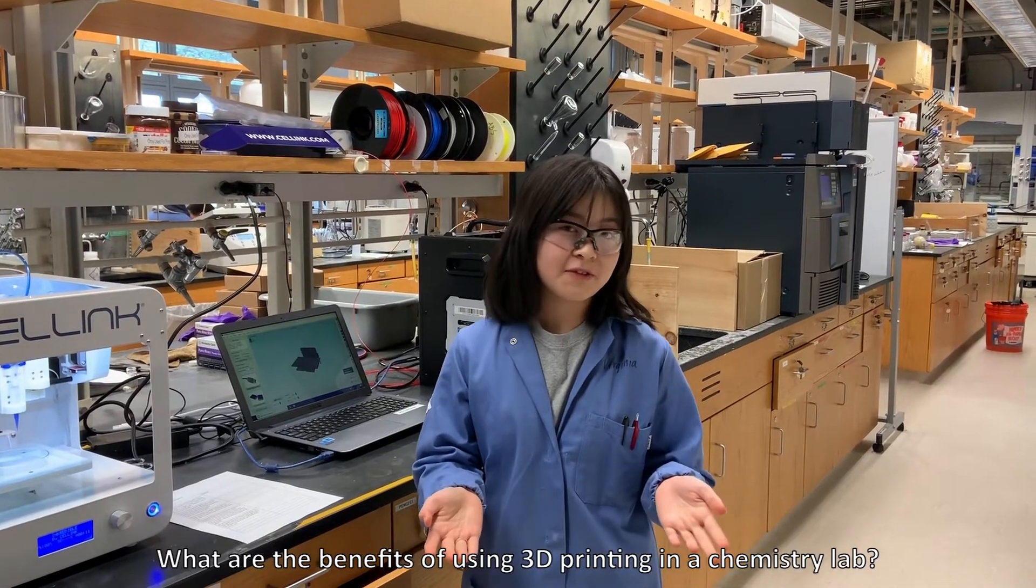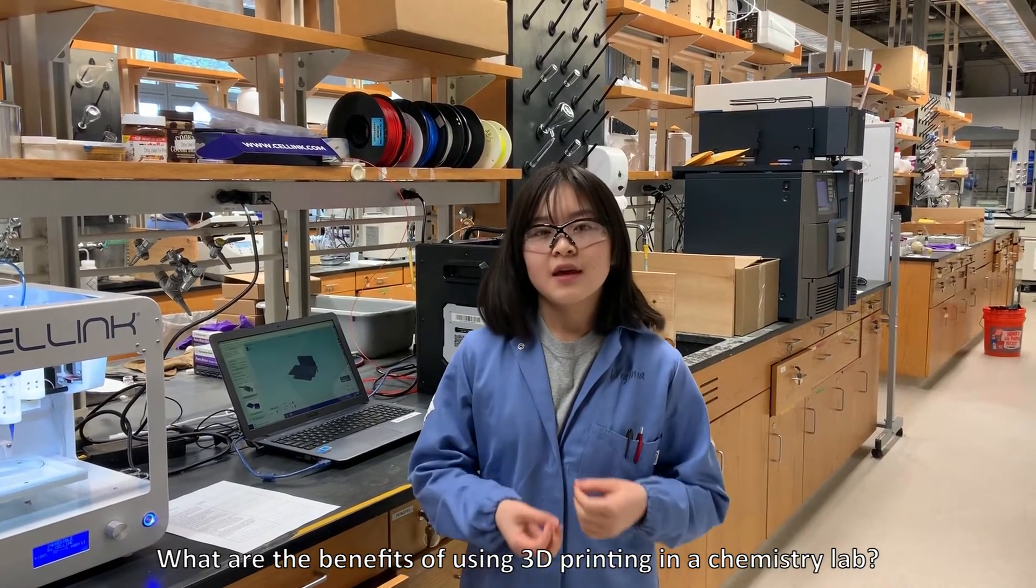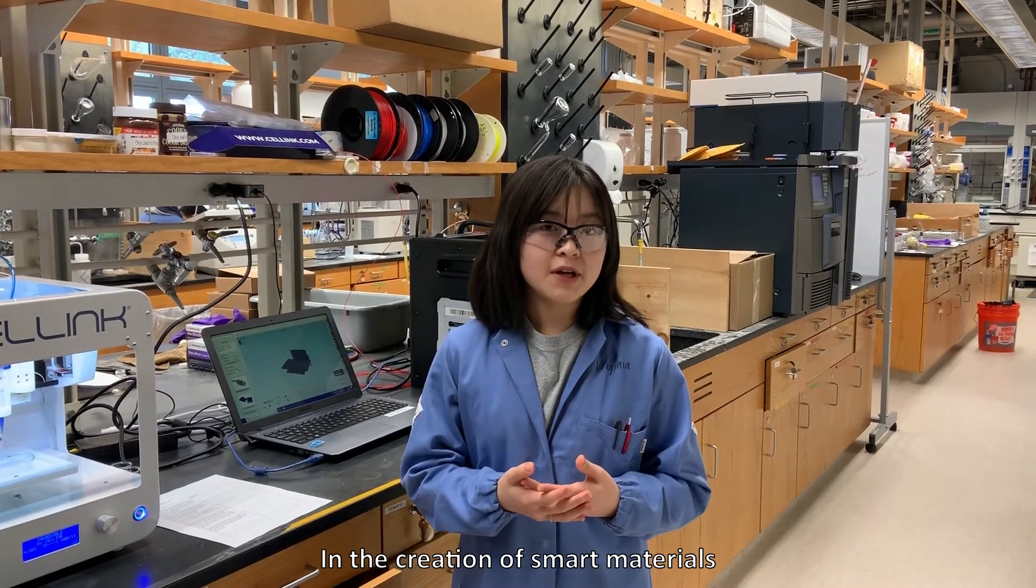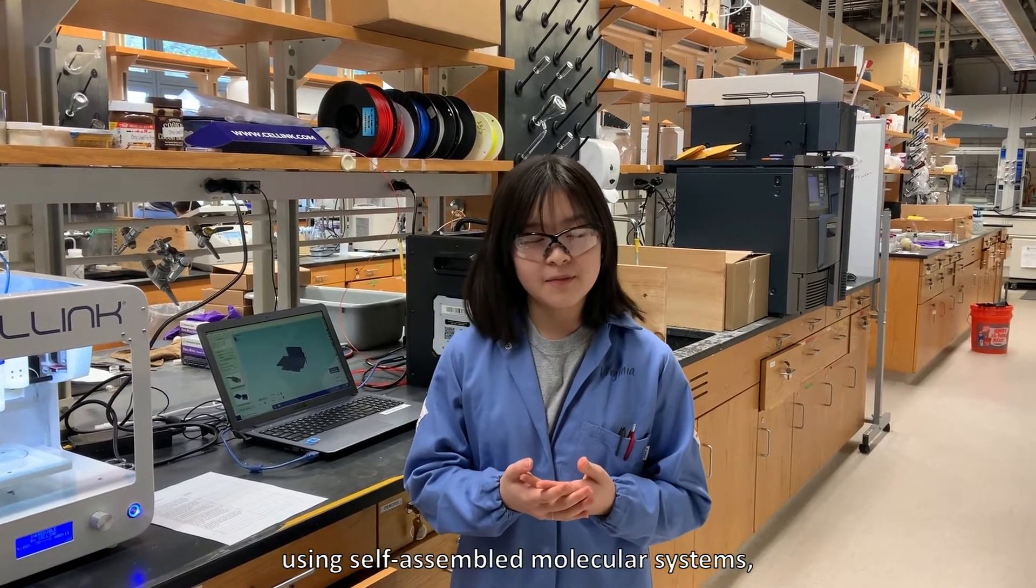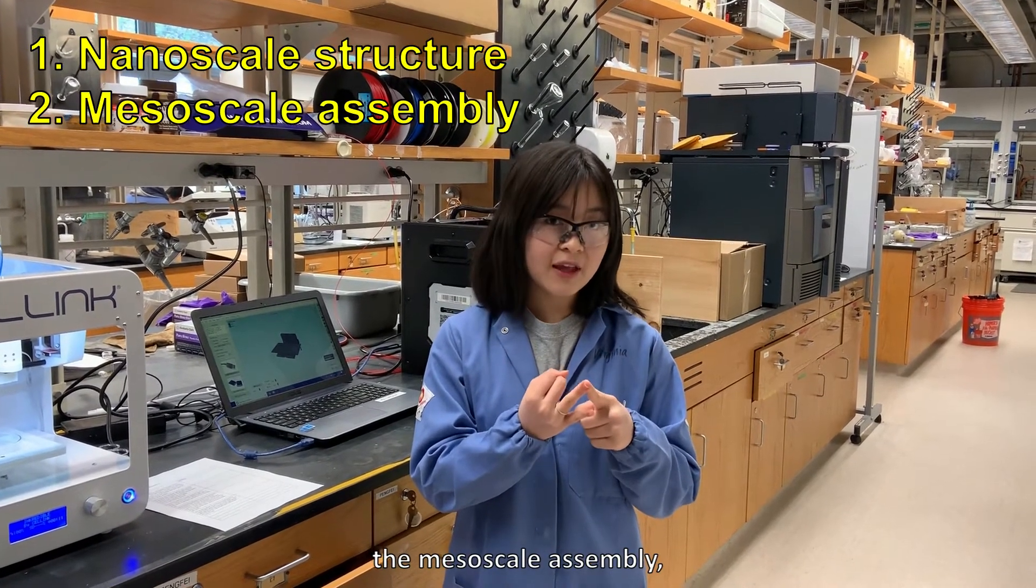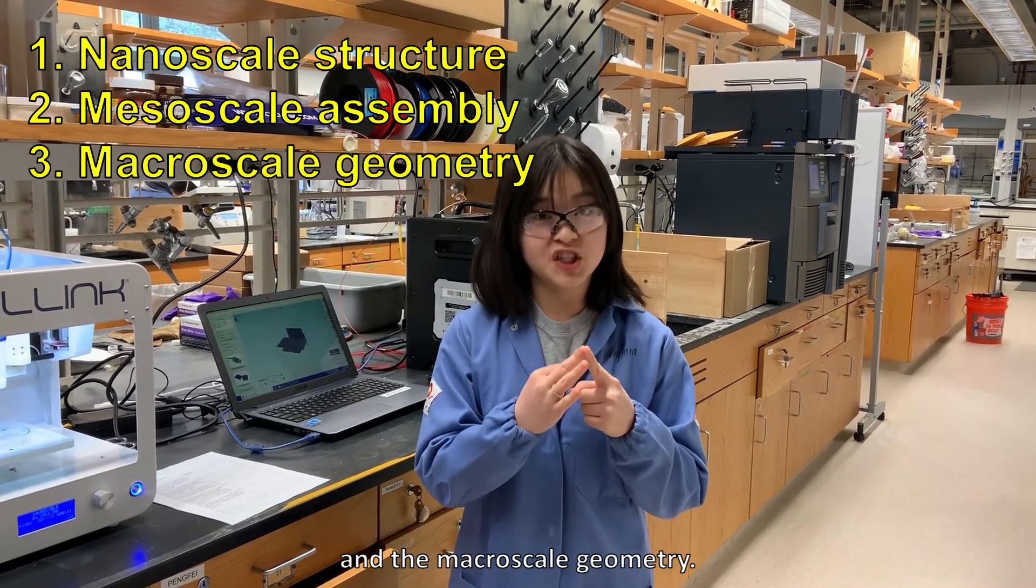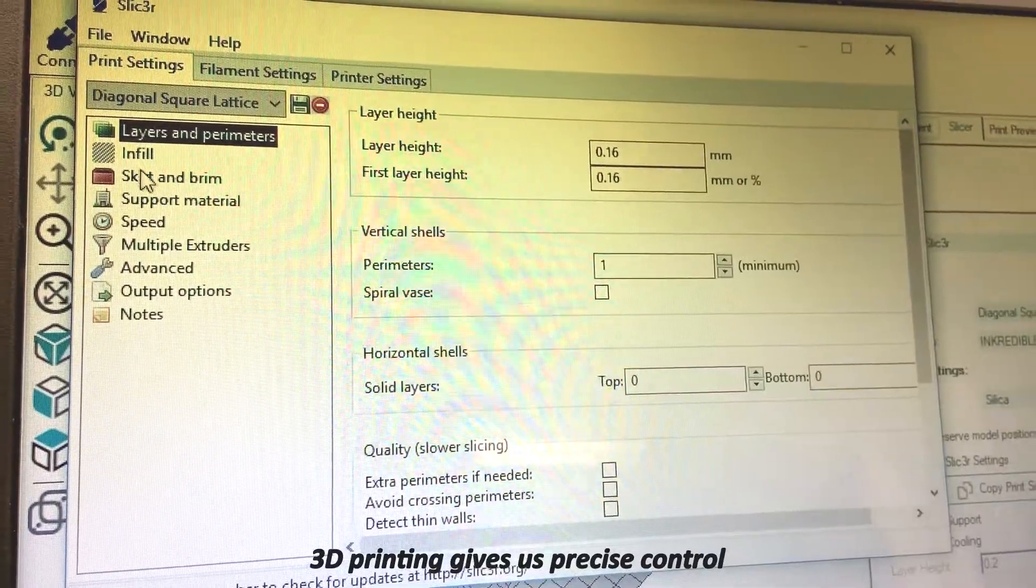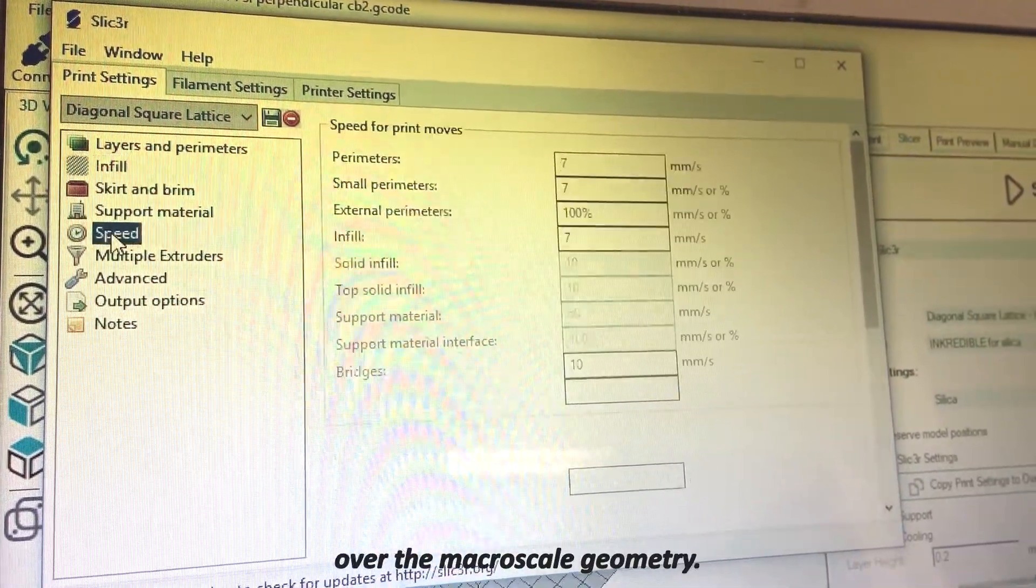What are the benefits of using 3D printing in the chemistry lab? In the creation of smart materials from self-assembled molecular systems, there are three things that need to be controlled: the nanoscale structure, the mesoscale assembly, and the macroscale geometry. 3D printing gives us precise control over the macroscale geometry.